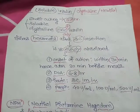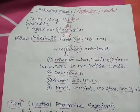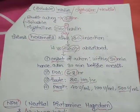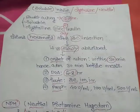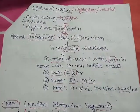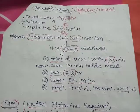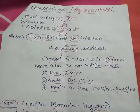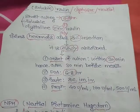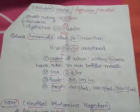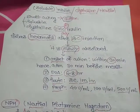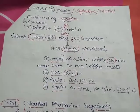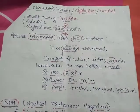Regular insulin is soluble in nature. The crystalline zinc insulin forms hexamers after subcutaneous injection, which is why it is slowly absorbed. The onset of action is within 30 minutes, and hence it should be administered 30 minutes before a meal.